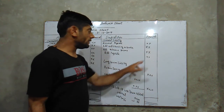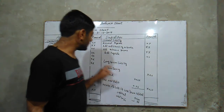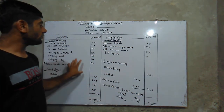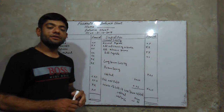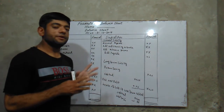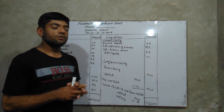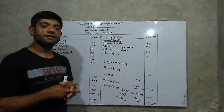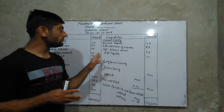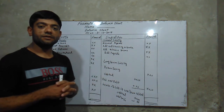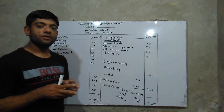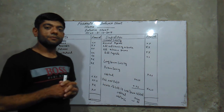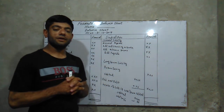In current liability, long-term liability, and capital, we add net profit; if there is a net loss, we deduct it from the capital. The total of both sides must be equal. This is the format of the balance sheet. In the next lecture we will discuss this format with an example. Keep learning, watch this lecture again so that you understand this format and can make a balance sheet for any question. Must remember and focus on this format. We meet in the next lecture. Thank you and goodbye.